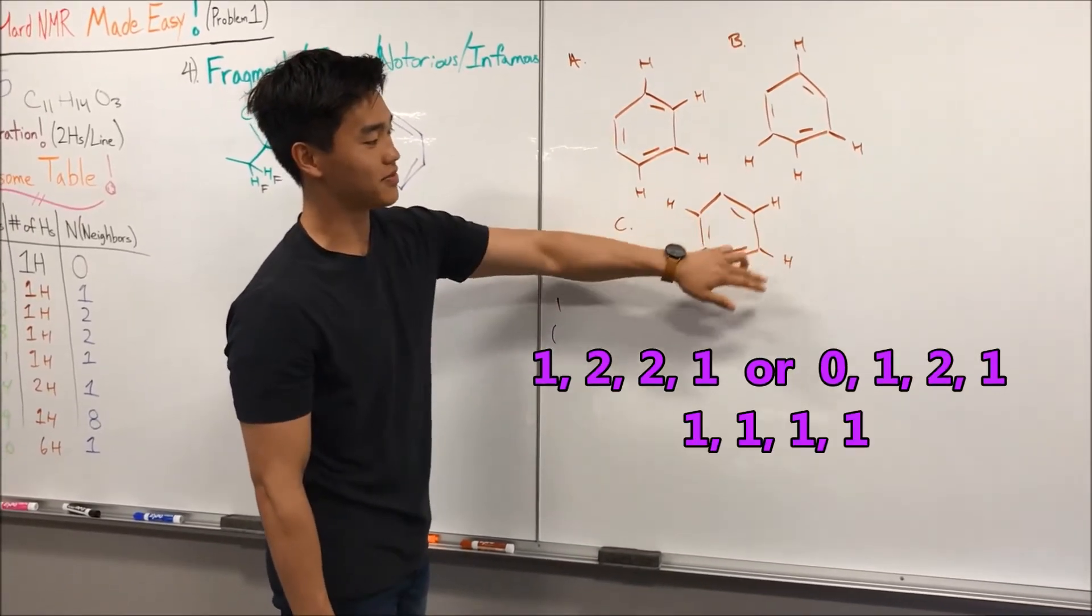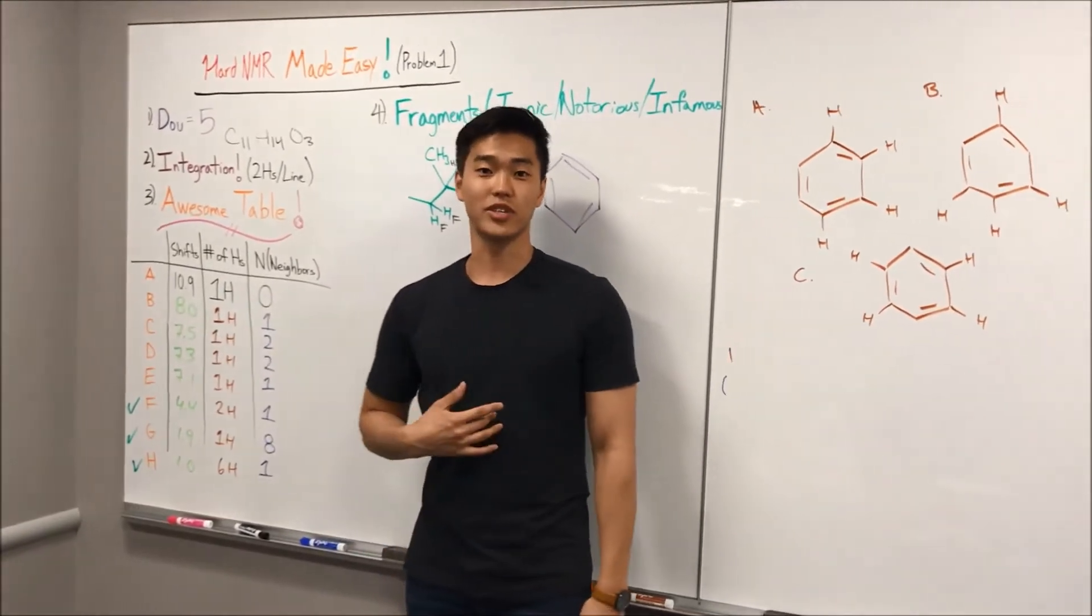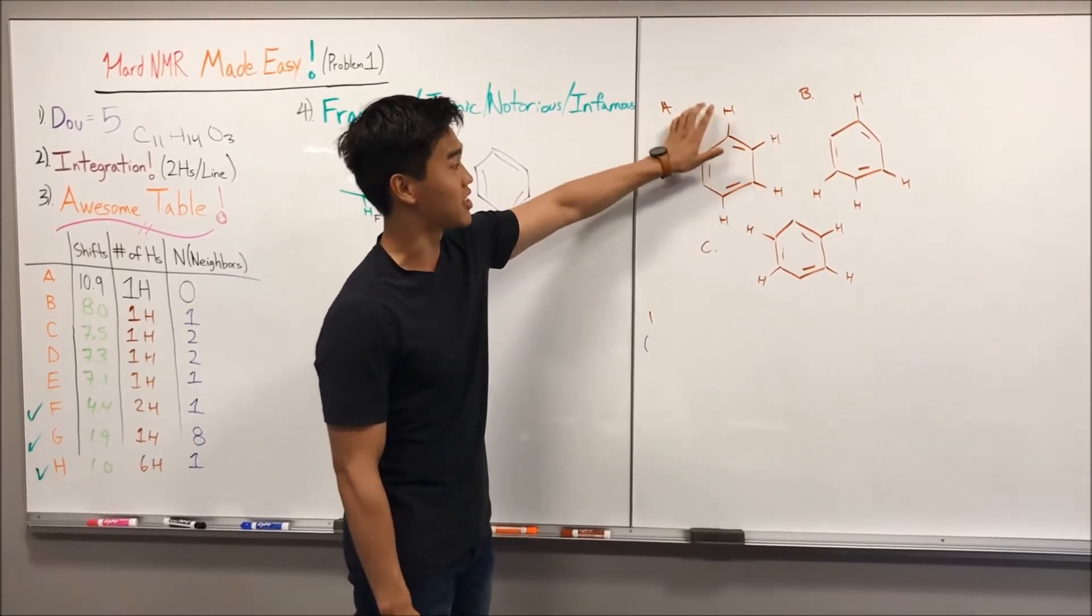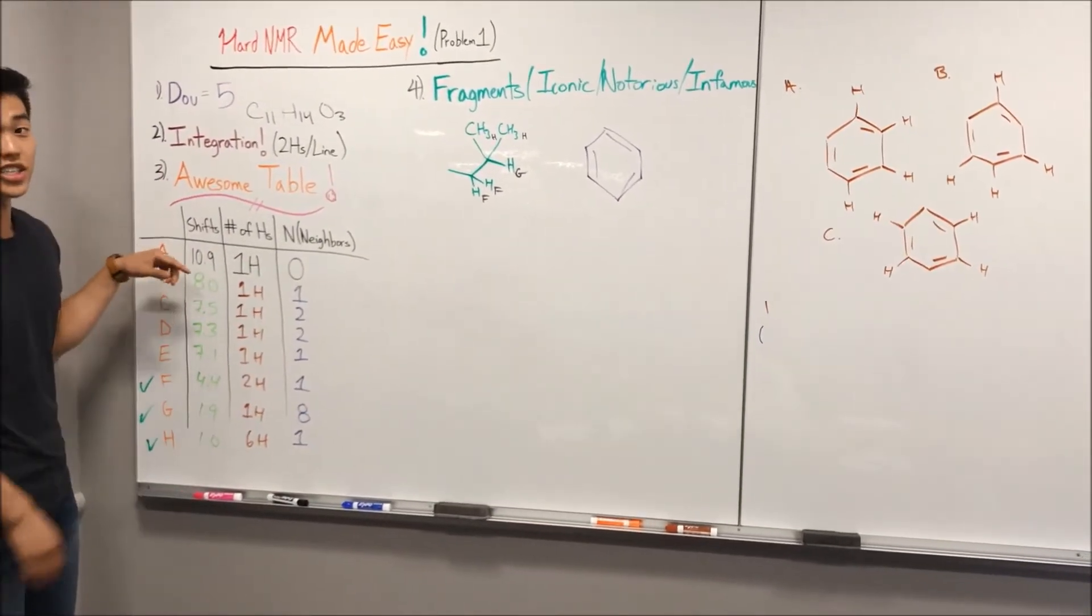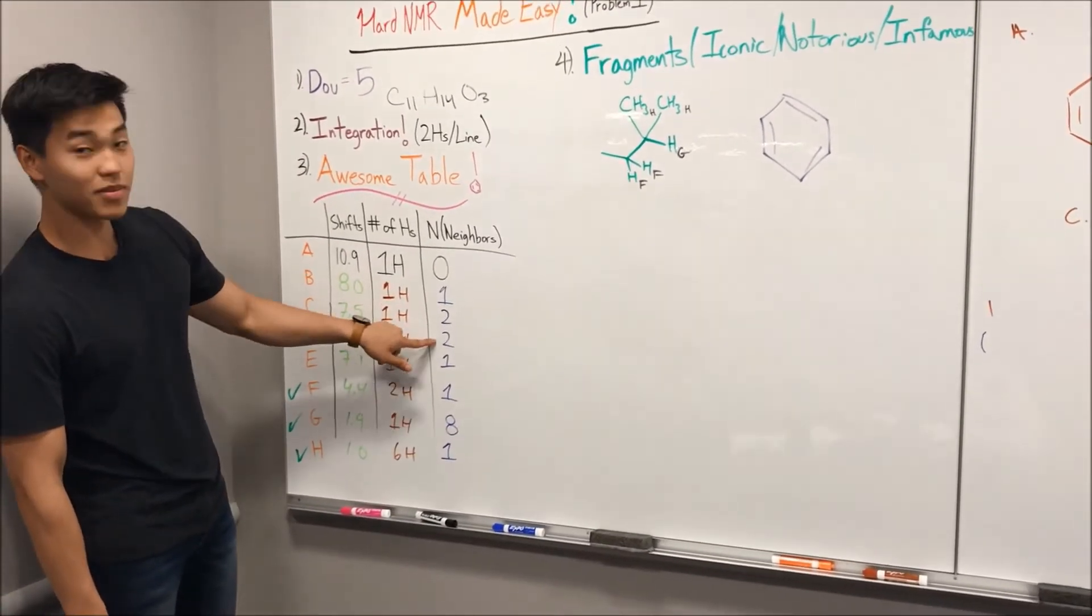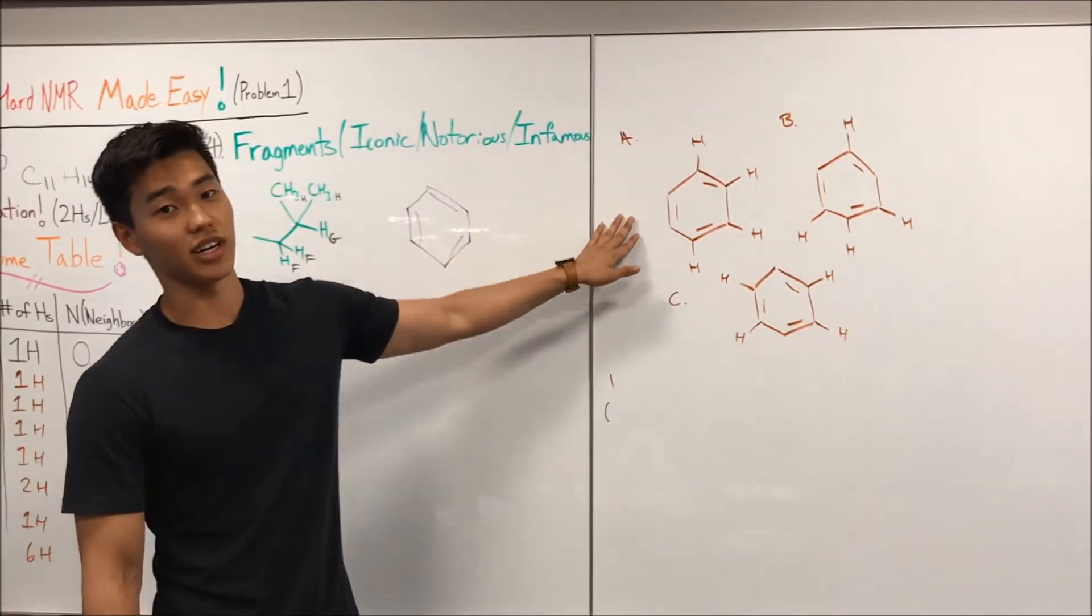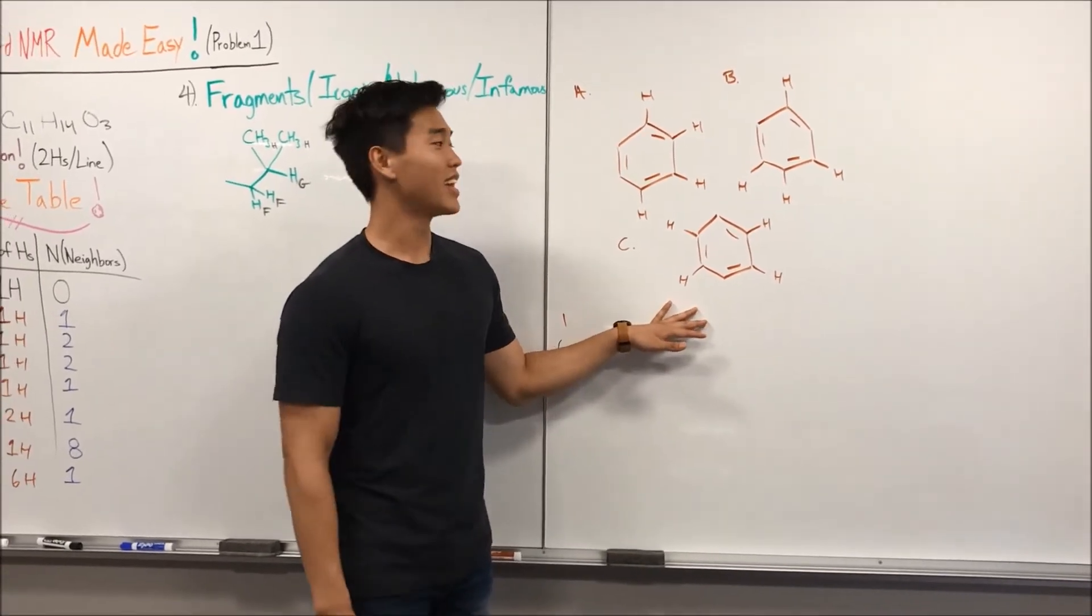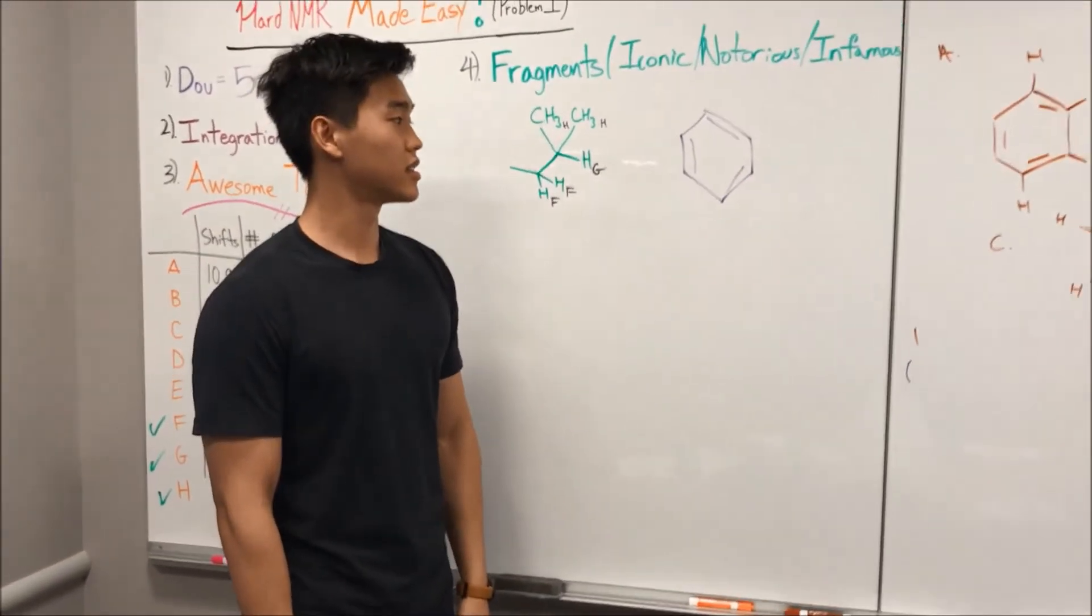Alright, so hopefully, if you did this on your own, you got something that kind of looks like this. Three possibilities. And so, the first possibility, which I denoted A right here, has all hydrogens adjacent to each other. And so, the important thing that you want to take away from these images is the hydrogen and their neighbors. So, if we look at A, we see that this hydrogen has one neighbor. This hydrogen has two neighbors. The hydrogen also has two neighbors, and this hydrogen also has one neighbor. If we look at B, this hydrogen has no neighbors. This one has one. This one has two, and this one also has one. So like the last one, C, you can see that these all have one neighbor.